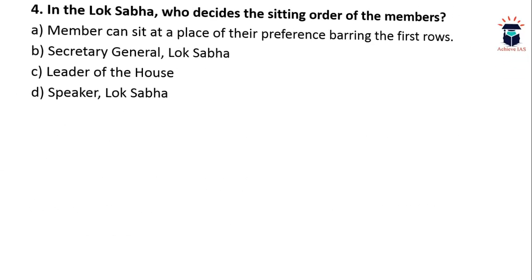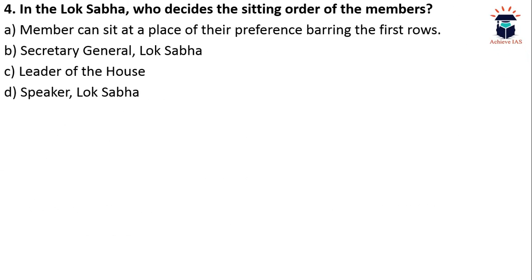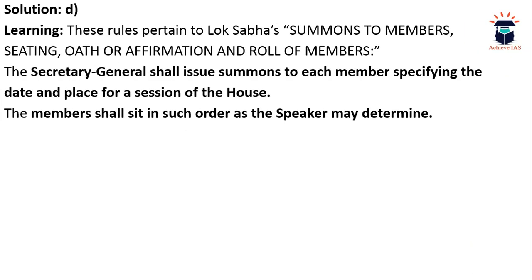Now let's move to the next question: in the Lok Sabha, who decides the sitting order of the members? A) Members can sit at a place of their preference barring the first rows, B) Secretary General Lok Sabha, C) Leader of the House, D) Speaker Lok Sabha. The answer is D. Members shall sit in such order as the Speaker may determine. The Secretary General shall issue summons to each member specifying the date and place for a session of the house.